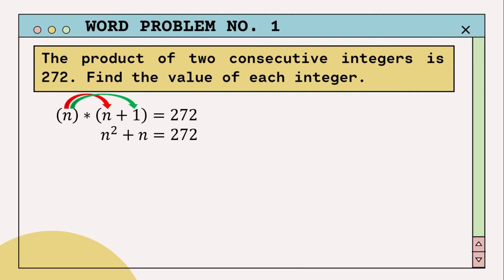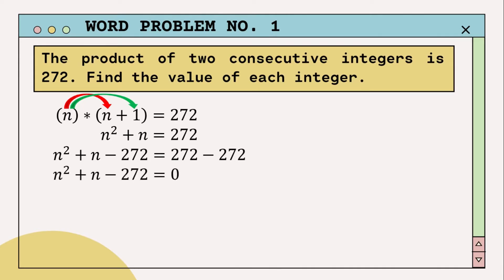Now set the equation equal to zero. In order to do that, we need to apply the subtraction property of equality to subtract 272 from both sides of the equation, so n squared plus n minus 272 is equal to zero. Once the equation is set to zero, it is time to factor and solve. Since the first term is n squared, the factoring must take the form: quantity (n plus blank) multiplied by quantity (n minus blank) equals zero.